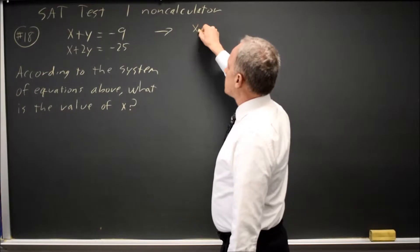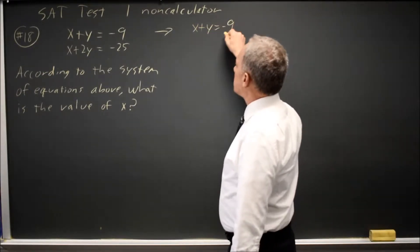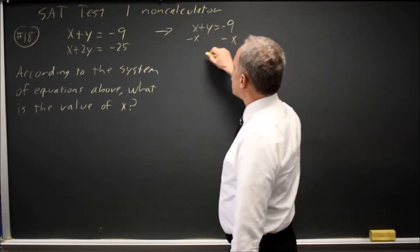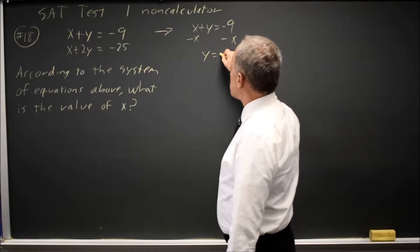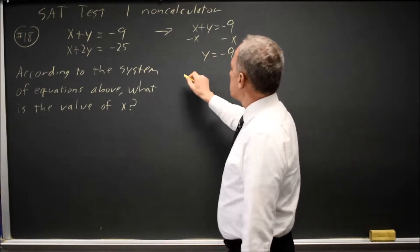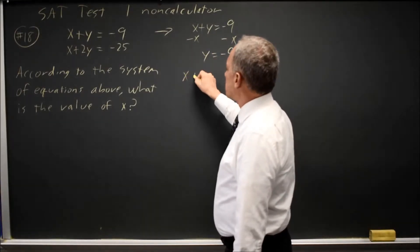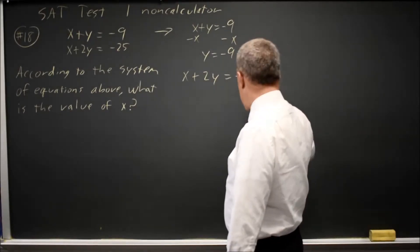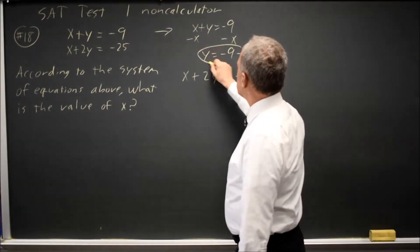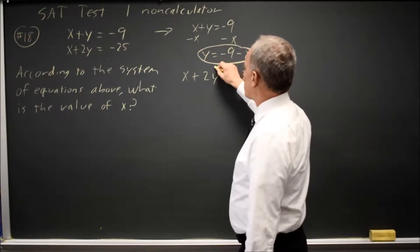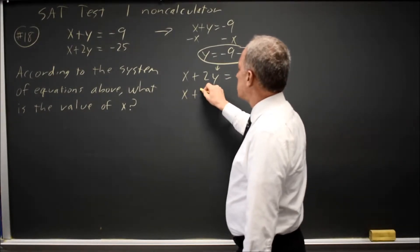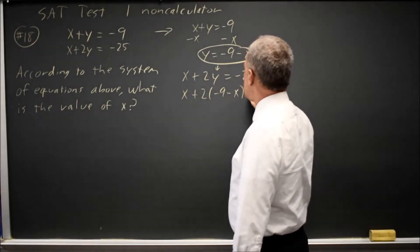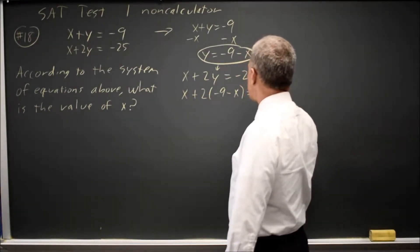So if I take x plus y equals negative 9 and subtract x from both sides, I get y equals negative 9 minus x. I have the equation x plus 2y equals negative 25, and I can substitute this expression in for y to get x plus twice (negative 9 minus x) equals negative 25.